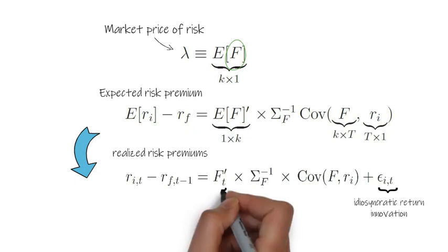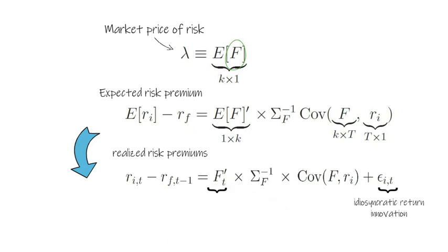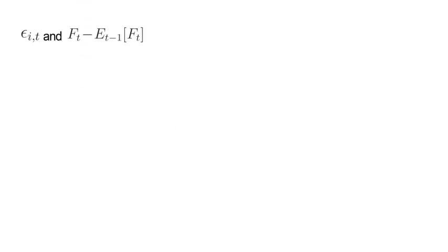Let's go to the first component. Here FT is the k times 1 column vector of realized factor premiums. So note, both epsilon IT and FT minus the conditional expectation of FT as of t minus 1 are unforecastable as of time t minus 1. So hence, these are two types of innovations.